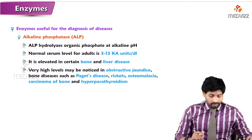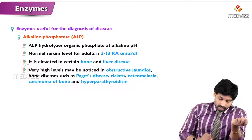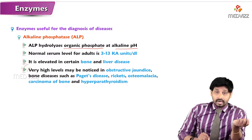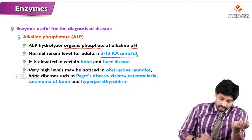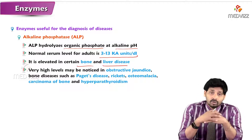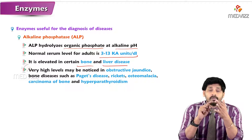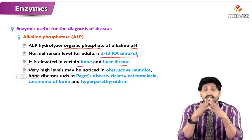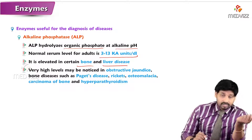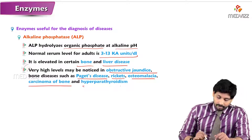Another enzyme of clinical interest is alkaline phosphatase (ALP), which hydrolyzes organic phosphates at alkaline pH. Its normal serum level in adults is 3 to 13 King-Armstrong (KA) units per deciliter. ALP is elevated in certain bone and liver diseases, especially in post-hepatic or obstructive jaundice conditions, as well as in pre-hepatic and hepatic jaundice types.